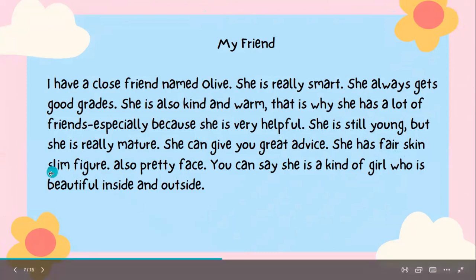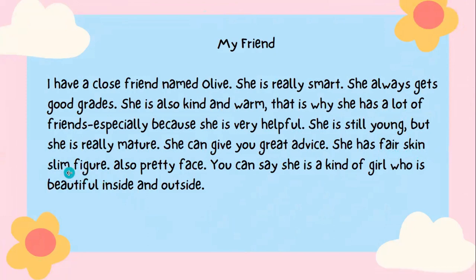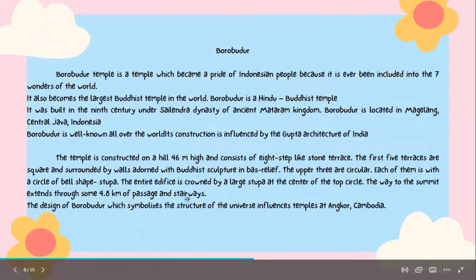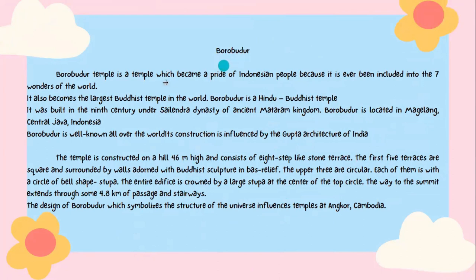Selain itu juga tadi ada pakai adjective in order. Contohnya: 'fair skin' — 'fair' adalah adjective (cerah), 'skin' adalah noun. Lalu 'slim figure' — 'slim' adalah adjective (langsing), 'figure' adalah noun. Dan 'pretty face' — 'pretty' adalah adjective, 'face' adalah noun. Kita lanjut, disini ada contoh descriptive text yang mendeskripsikan sebuah tempat, judulnya adalah Borobudur.